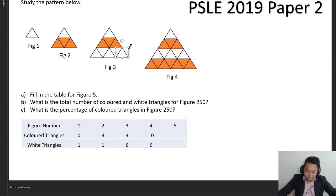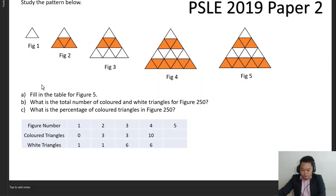In figure four you have got ten colored triangles and six white triangles. Part A asks to fill in the table for figure five. Part B asks what is the total number of colored and white triangles for figure 250, and what is the percentage of colored triangles in figure 250?